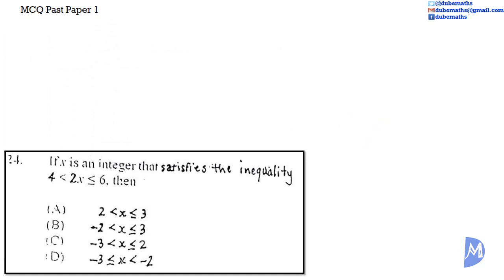Is it B: negative 2 is less than x, which is less than or equal to 3? Is it C: negative 3 is less than x, which is less than or equal to 2? Or is it D: negative 3 is less than or equal to x, which is less than negative 2?